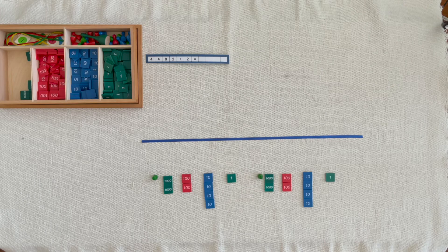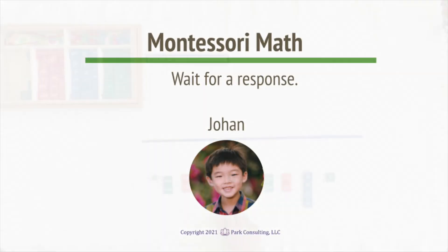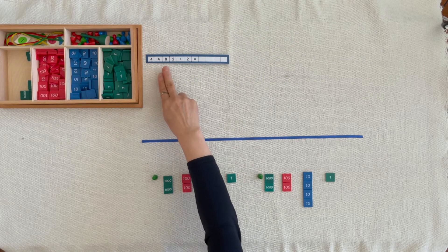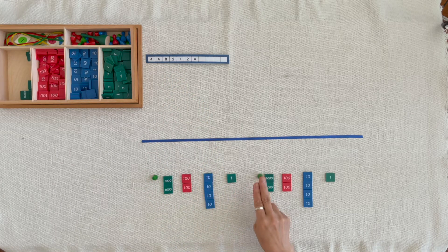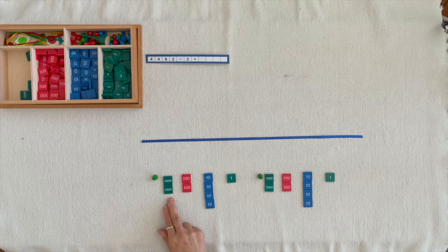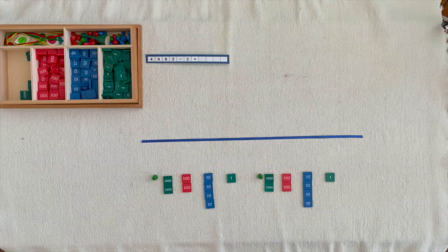How many does each Skittle have? We put out 4,402 units and we shared it equally among 2 Skittles. When we counted what each Skittle got, you counted the quotient of 2,201 units. This operation is called division.